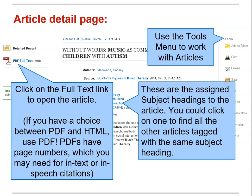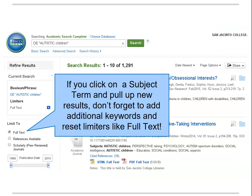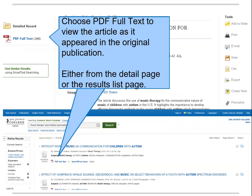If the article is in a PDF file, you will have to open the file and use the PDF print option to print the article. If you click on a subject heading and navigate away from your original results list, don't forget to check your limiters and make sure you're still looking at only full text articles. To bypass the detail page, just click where it says PDF or HTML Full Text in the results list.